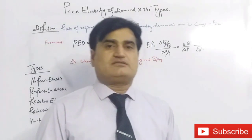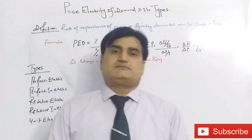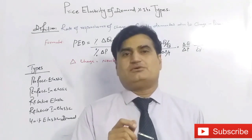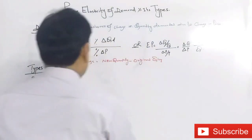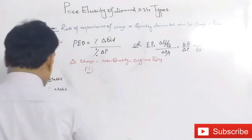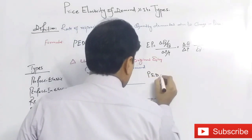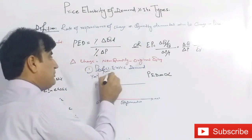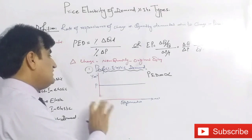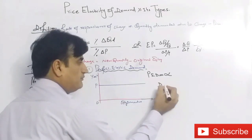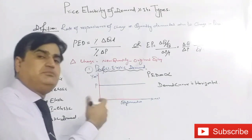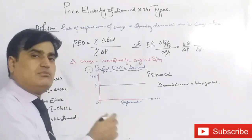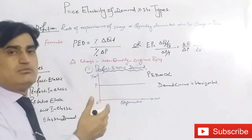The first type is Perfect Elastic Demand. Perfect Elastic Demand means that a minor change in price leads the quantity demanded almost to zero or to infinity. Under Perfect Elastic Demand, the demand curve is horizontal. A minor change in price causes the quantity demanded to fall almost to zero or rise almost to infinity.